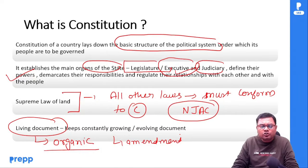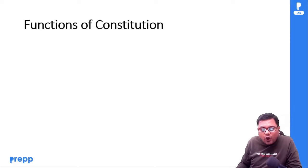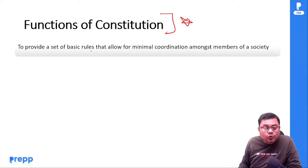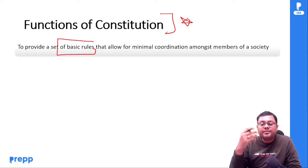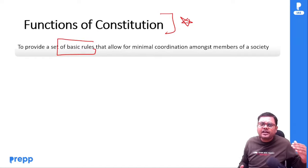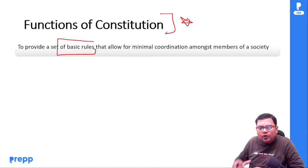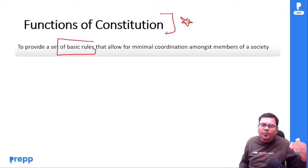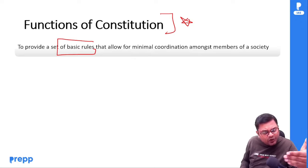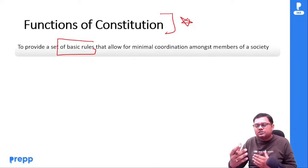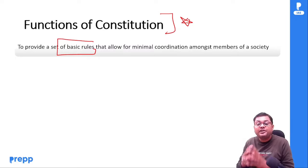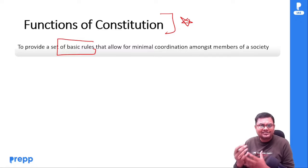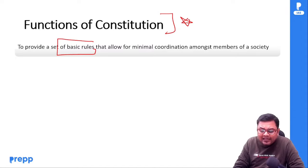अब हम समझेंगे कि constitution के functions क्या होते हैं। सबसे पहला function है: to provide a set of basic rules that allow for minimal coordination amongst members of a society। India एक diverse country है, different groups हैं, but उनके बीच में harmony होनी चाहिए, एक minimum coordination होना चाहिए। अगर law नहीं होगा तो liberty नहीं मिलेगी — यह question आया था in film's examination। Suppose society में कोई section poor है या backward है, तो उनके साथ discrimination नहीं होना चाहिए। इसके लिए basic rules होने चाहिए।